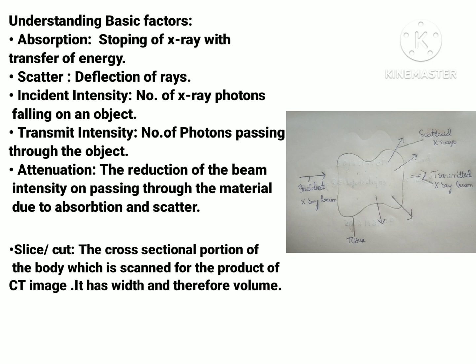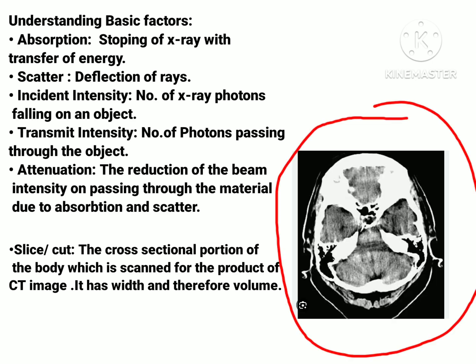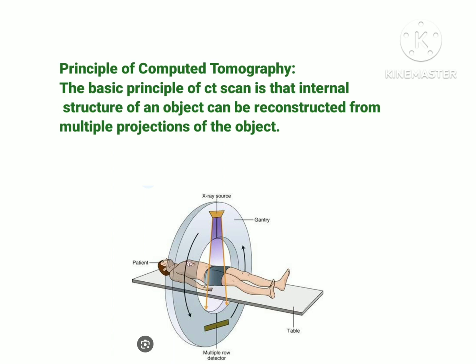The next term is slice or cut. As mentioned, CT scan creates images of cross-sectional slices of the body. These cross-sectional portions of the body which are scanned to produce a CT image are called a slice or cut. A slice has both width and volume. The width of a slice is determined by the width of the x-ray beam — whatever the x-ray beam's width is, that will be equivalent to the width of that slice.